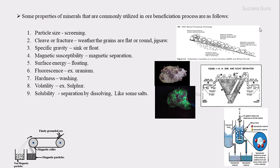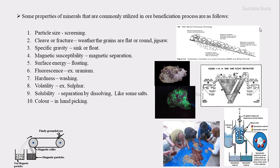The next property is solubility. Some salts dissolve in water while others do not. For example, if you have a potassium salt mixed with quartz: quartz will not dissolve in water, but potassium will dissolve in water. By this method you can separate both the potassium and the quartz.